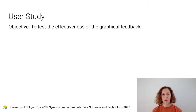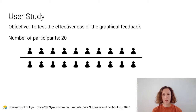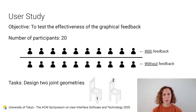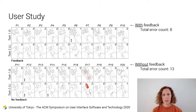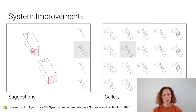To test the effectiveness of the graphical feedback, we performed a user study with 20 participants. This study was performed on an earlier version of the system and informed some system improvements. The participants were divided into two groups, one with and one without visual feedback. They were given the same tasks to create two geometries. As expected, the group with feedback performed better, making eight errors compared to 13. Even so, the error count was rather high in the group with feedback. We realized that whereas the graphical feedback is very effective to indicate where there is a problem, it does not tell how to solve it. This observation motivated us to extend the interface with the suggestions and the gallery.